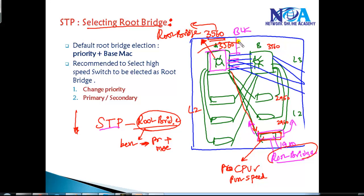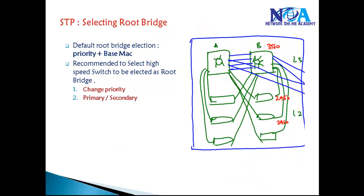To improve network performance, it's always recommended to manually select the root bridge. We want our best, high-speed switch — maybe a 3550 or 3560 — to become the root bridge, so all traffic flows through that switch instead of the 1900 series switch. To do this, we can manually change the priority value by reducing it lower than any other switch or the default values.